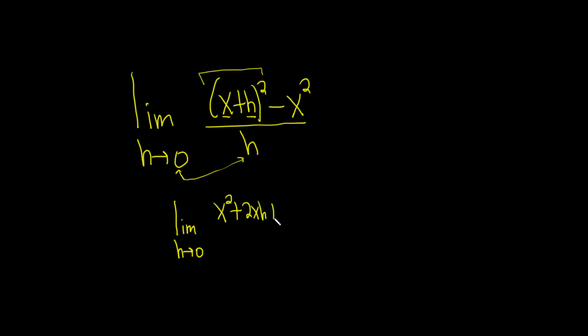And then you square the last one so plus h squared. And then minus we still have our x squared here. And this is all being divided by h.